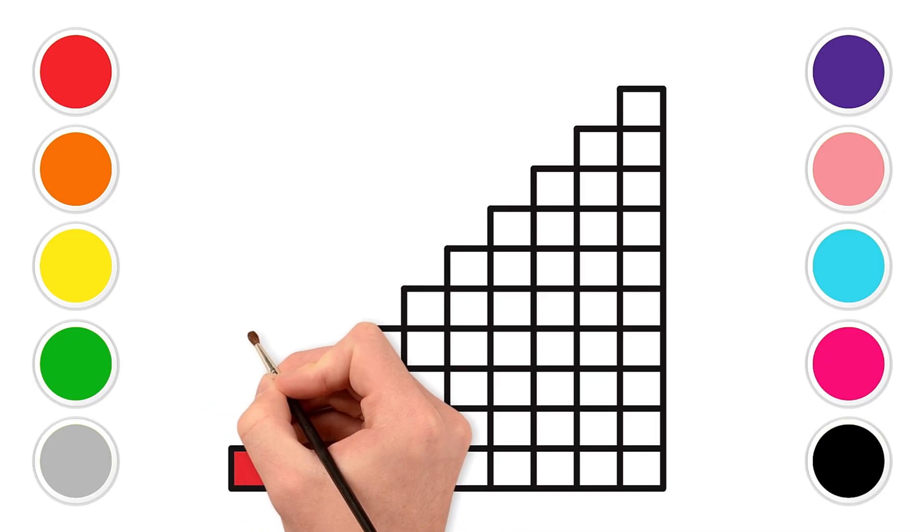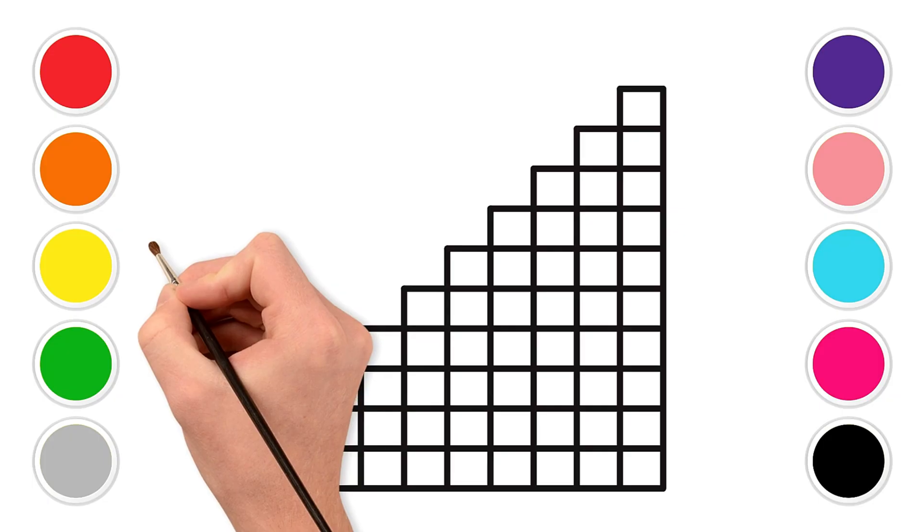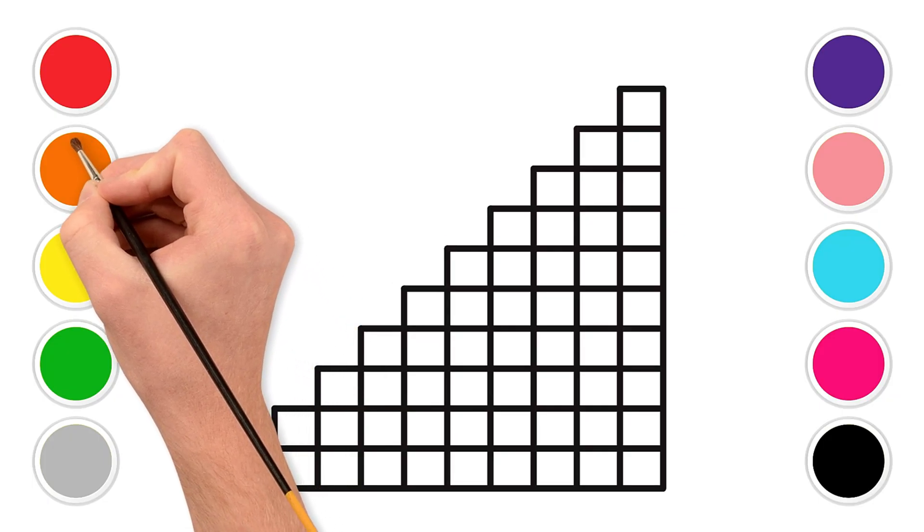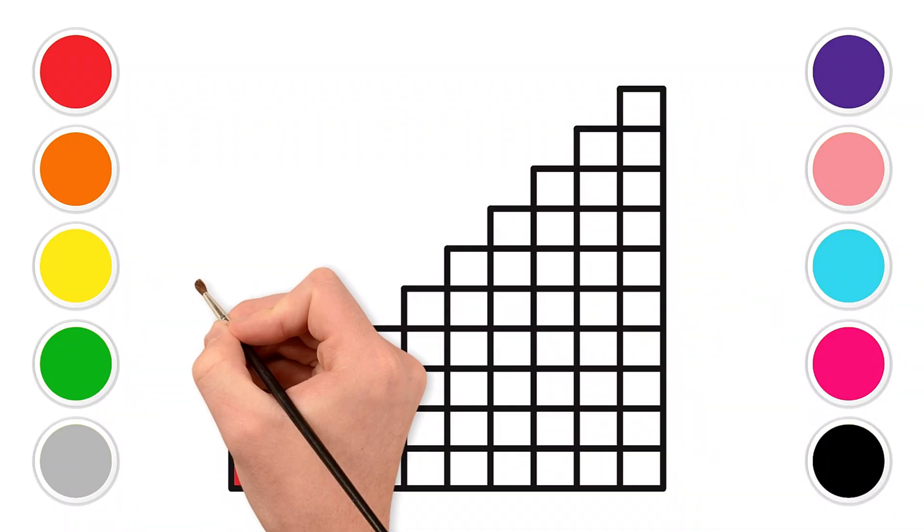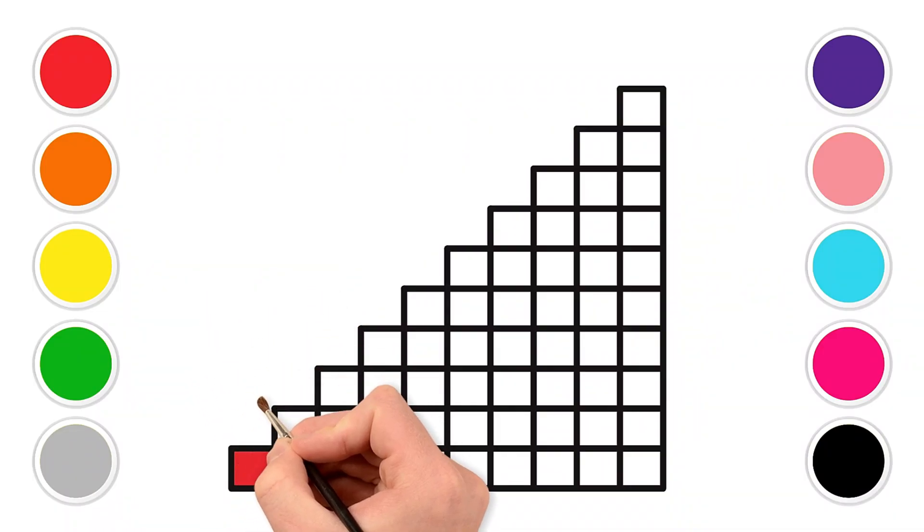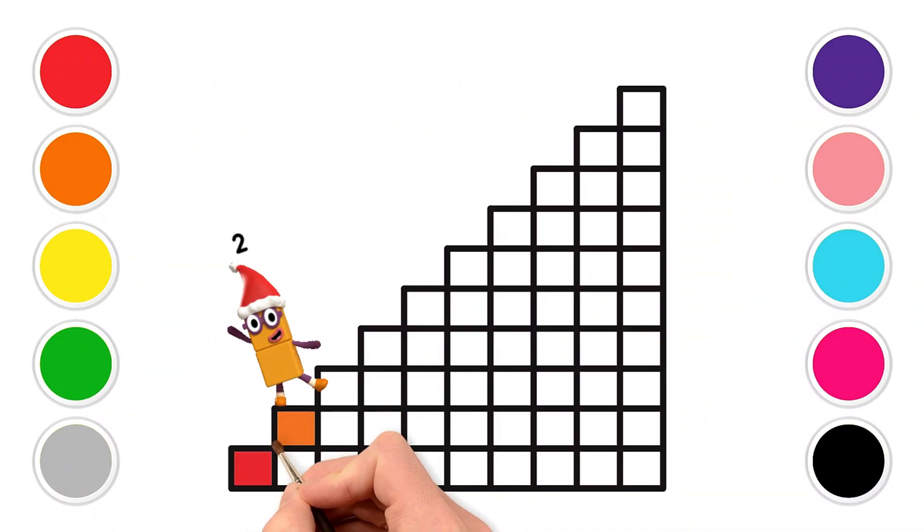Next to red is a juicy orange. Orange, O-R-A-N-G-E. For number two. Two, T-W-O.